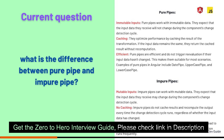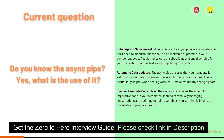What is the difference between a pure pipe and an impure pipe? A pure pipe works only when there is a pure change in the input. An impure pipe executes on every change detection cycle. The async pipe is actually a good example of an impure pipe. By default, when we create a pipe it is a pure pipe.